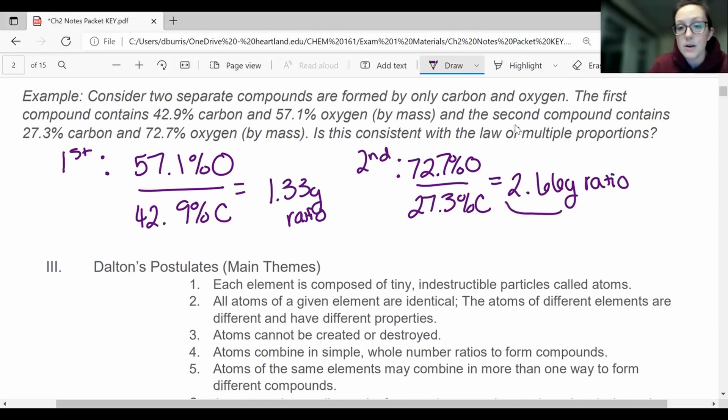Now, you might already be able to tell 2.66 and 1.33. Those are going to be able to give us a whole number ratio. But to actually check, you compare the ratios, 1.33, and you get 2, which is a whole number. Okay, so any combination of carbon and oxygen should be able to give you a whole number ratio. And if not, then it doesn't follow the law of multiple proportions. So it will, otherwise you probably did the math wrong. So it follows a law of multiple proportions anytime you have different combinations of the same elements.